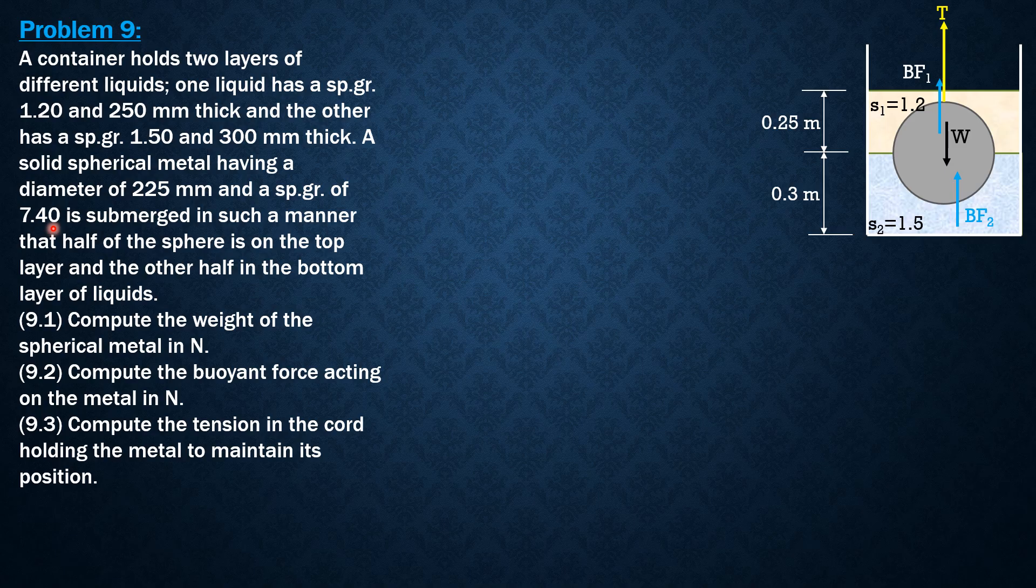For the weight, it is specific weight of metal: 7.4 times 9.810 newtons per cubic meter times volume of the sphere, which is 4/3 π r³. So weight equals 7.4 times 9.810 times 4/3 π times 0.1125 meters cubed.